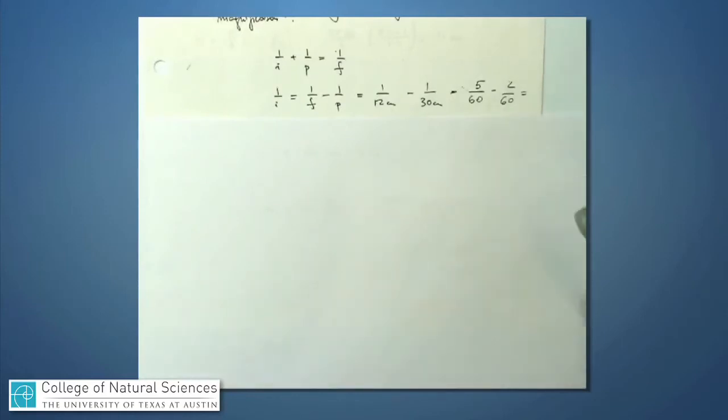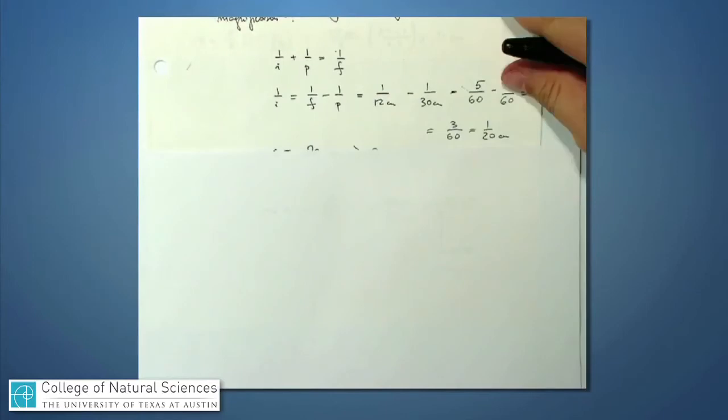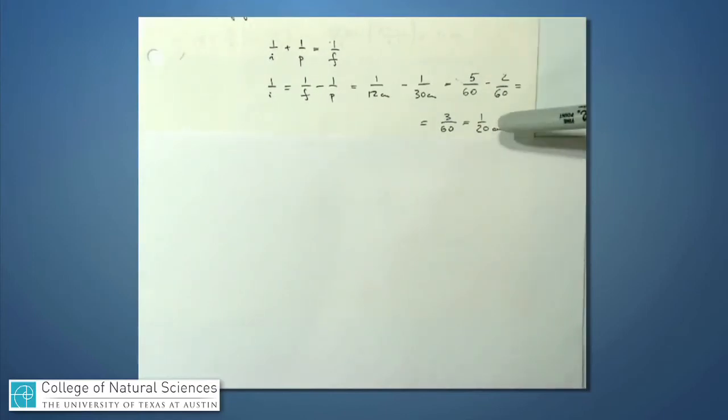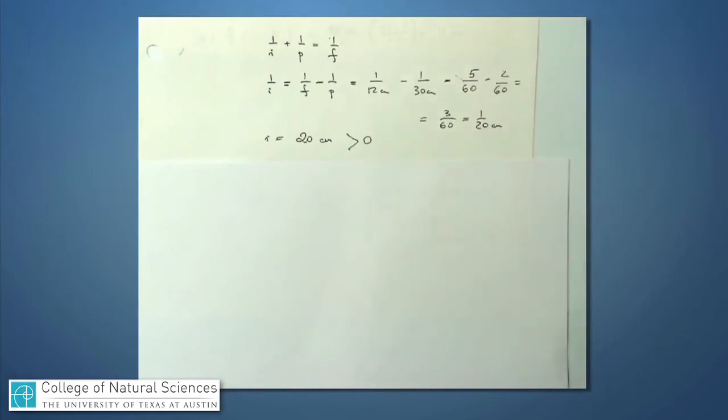If I want to put this over a common denominator, the least common denominator is 60. So this would be 5 over 60 minus 2 over 60. And that's 3 over 60, or 1 over 20 centimeters. This means that the image distance is 20 centimeters, and notice that it's positive. That means that the image will be over on the real side of this mirror.